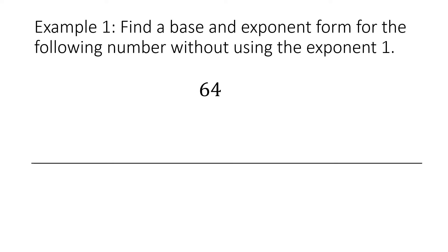Let's look at example 1. Find a base and exponent form for the following number without using the exponent 1. We're trying to find a base and an exponent that gives us 64. We know that 64 to the first power equals 64, but the example says not to use the exponent 1, so we need a different base and exponent. Using the chart, we know that 8 to the second power, or 8 squared, equals 64. So the base is 8 and the exponent is 2.